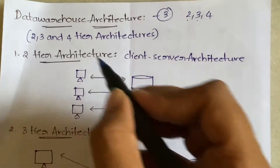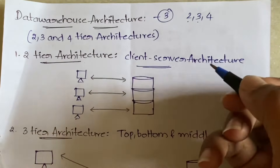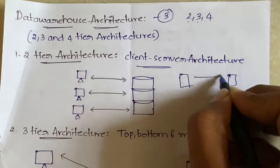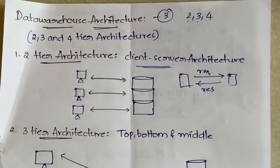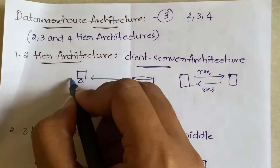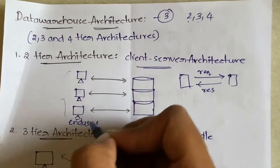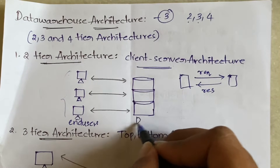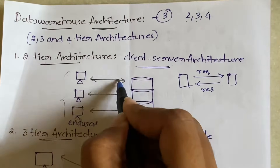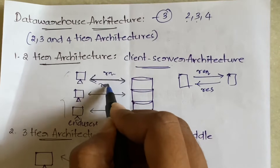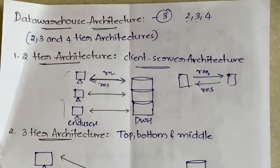In two-tier architecture we follow the client-server architecture. You'll have a client, you'll have a server — the client will request and the server will send the response. As you can see here, these are the end users and this is the data warehouse, also called data server or data source. The end users will be requesting for information — we have two arrows, one for request and one for response. The end user communicates directly with the data warehouse.